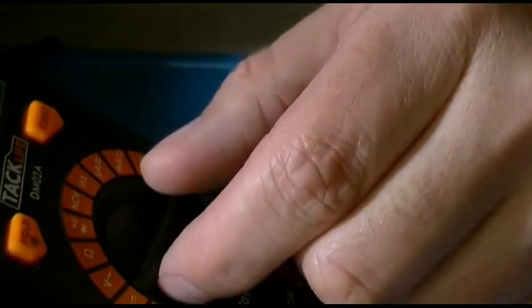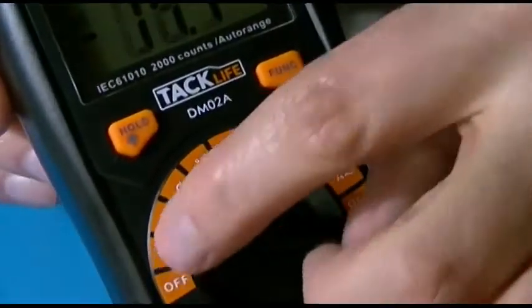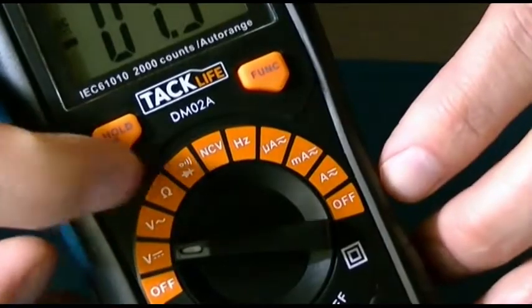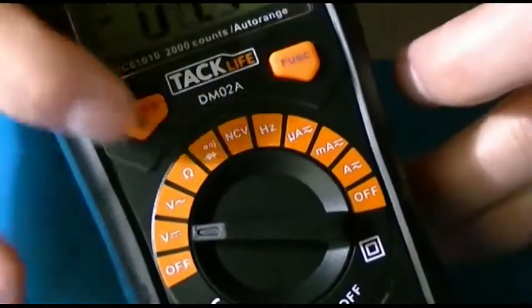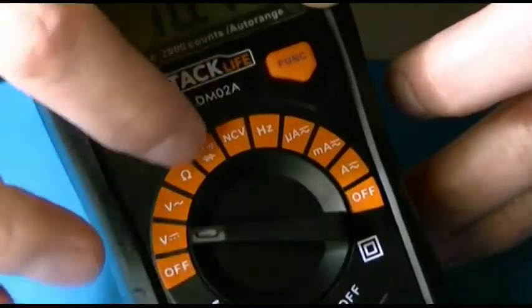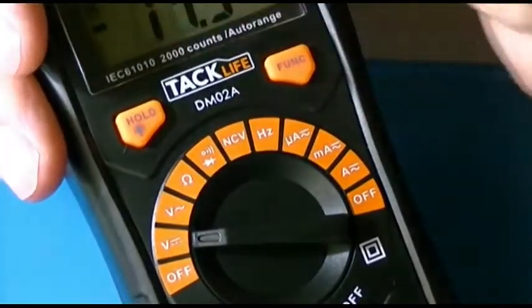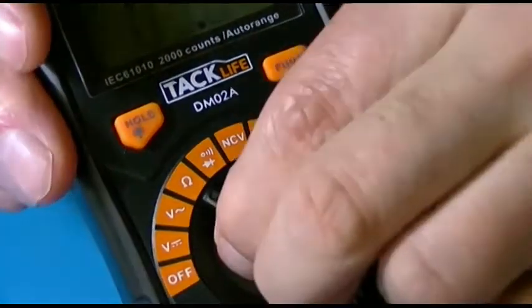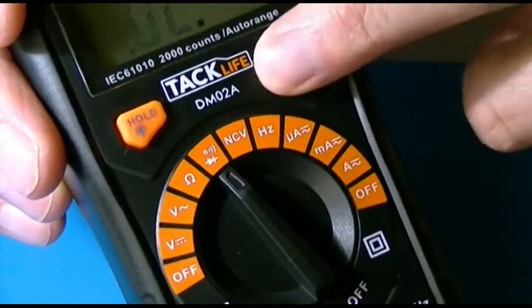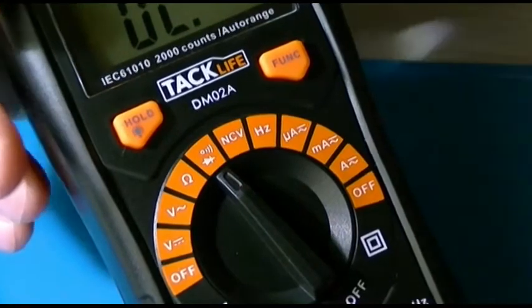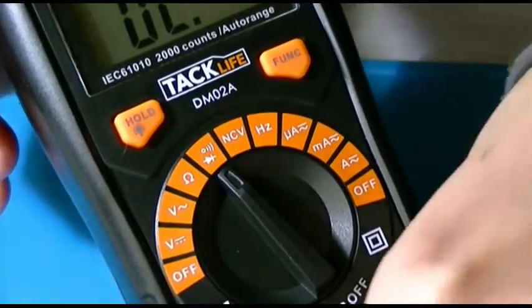But yeah, as you can see, it's got the volts, ohms, resistance, diode check. And this one also, when you flip the function, will switch from voltage to the ohms. And that's where you can do the audible continuity.